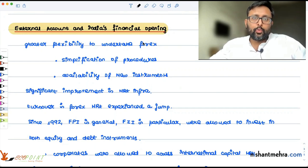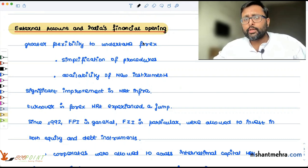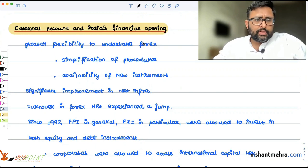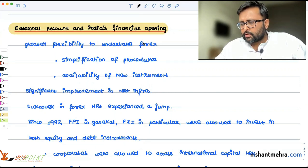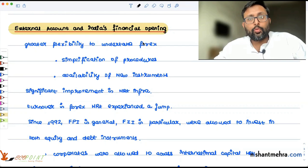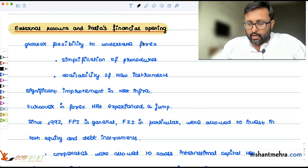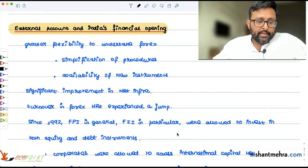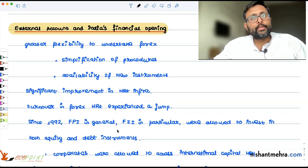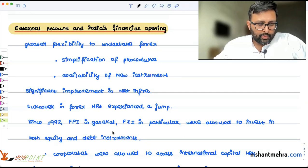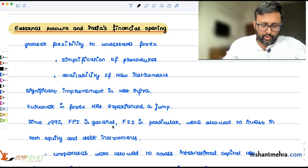One is the external account and another is non-banking financial corporations. As far as external account is concerned, from 1992 on, there had been greater flexibility which has been given to foreign players also. Procedures were simplified. New instruments are available. Infrastructure is developed to undertake these financial transactions. The turnover in the forex market has also experienced a lot of increase. Since 1992, foreign portfolio investors and foreign institutional investors can invest in both equity market as well as in debt instruments.